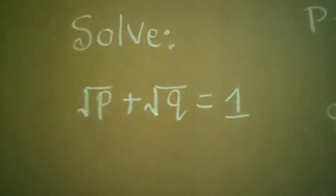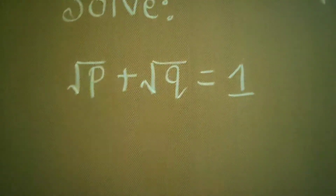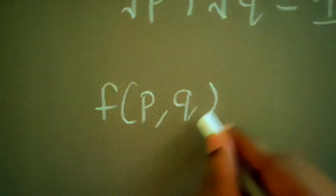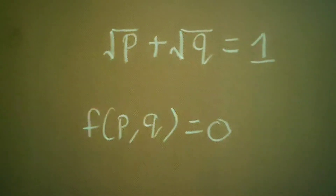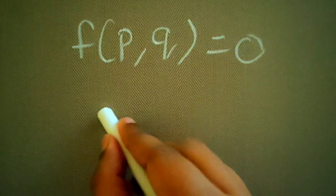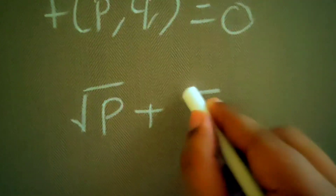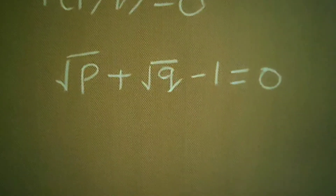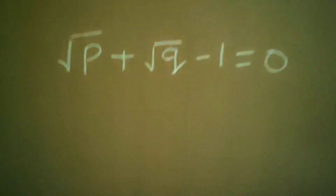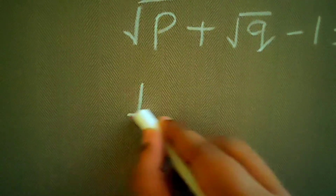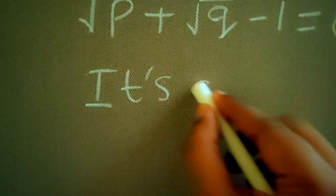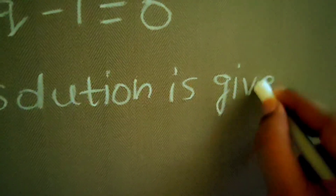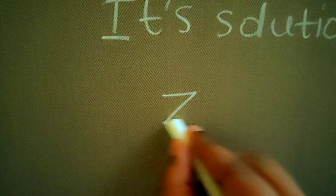Now, how to solve this type of question: first, you have to get a function of p comma q equals to zero. In order to get this, I will take this term to the left-hand side, so I get: under root p plus under root q minus one equals zero. This is the function f(p, q).